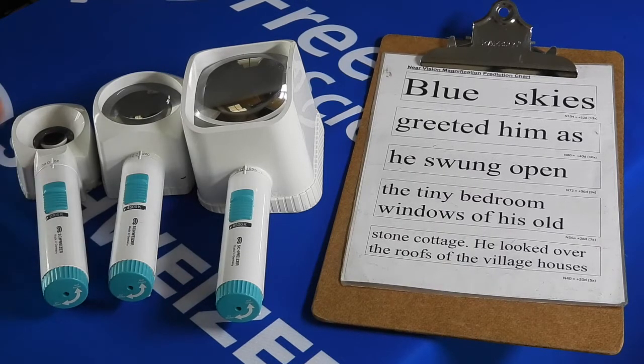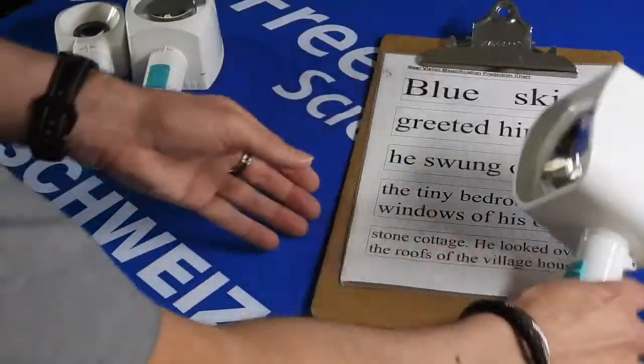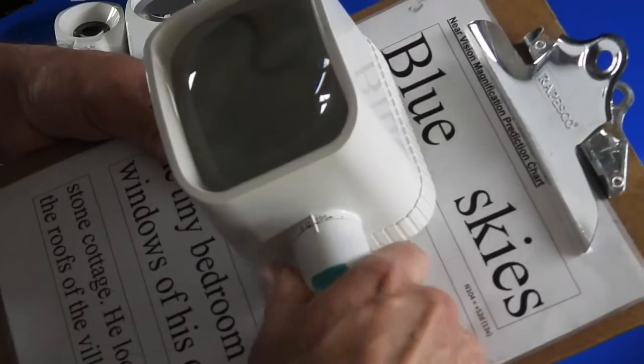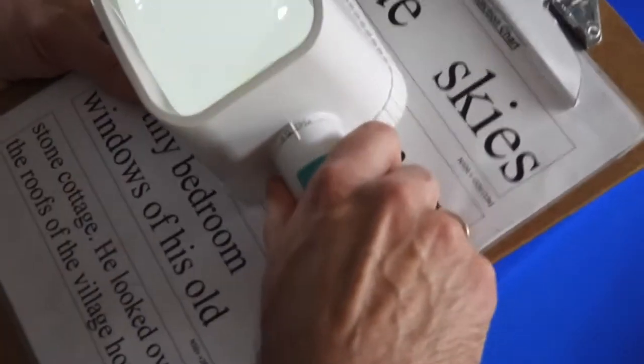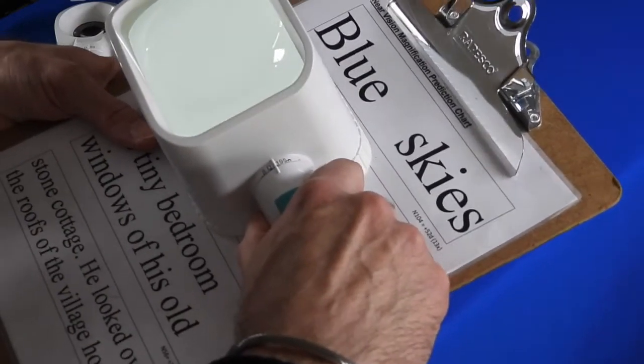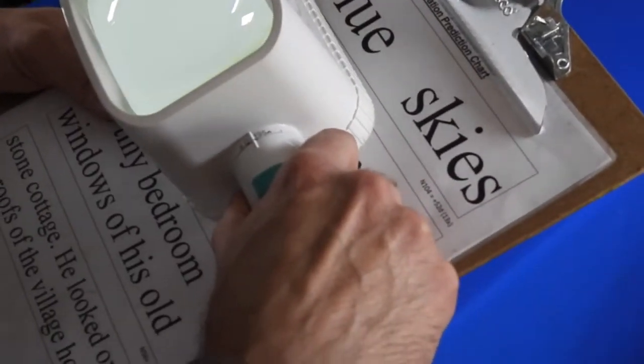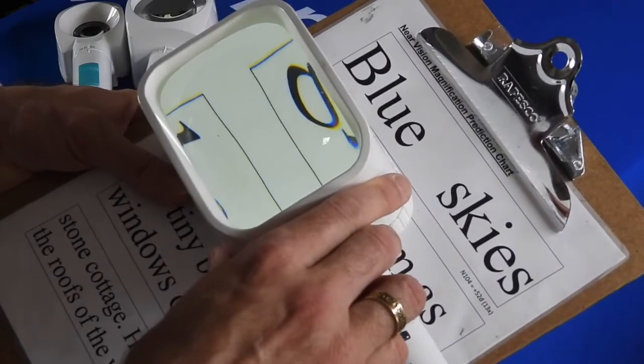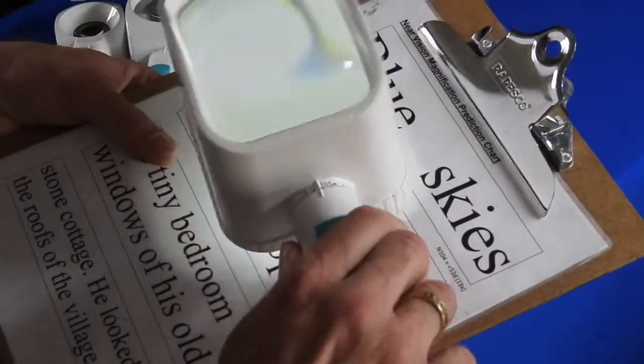In the exact same way as a hand magnifier, you have to hold the magnifier at a set distance and then move your vision and your eyes closer to the lens to get it into focus. One of the benefits of a stand magnifier is that the head is already set to the correct focal distance.